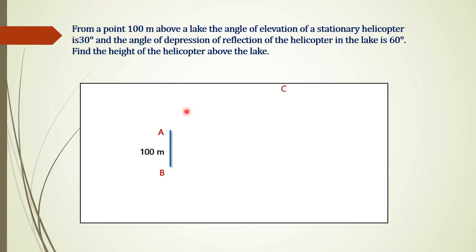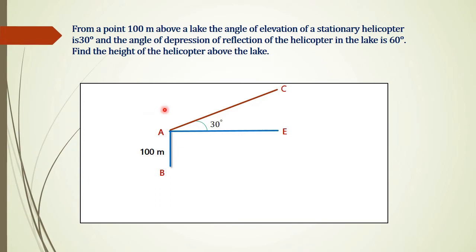From point A we are observing C at an angle of elevation of 30 degrees. Next, the angle of depression of the reflection of the helicopter in the lake is 60 degrees. There is a reflection of the helicopter at point D, and from point A we are observing the helicopter's reflection at D at a depression angle of 60 degrees.